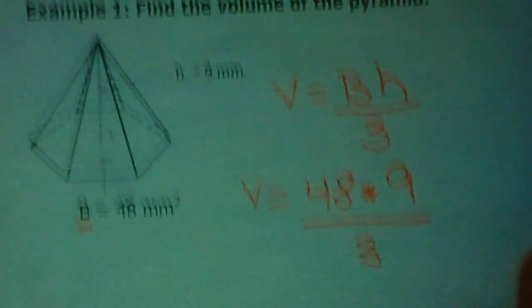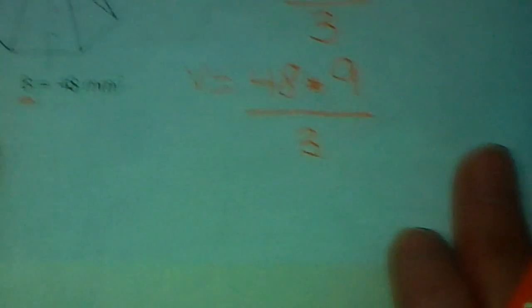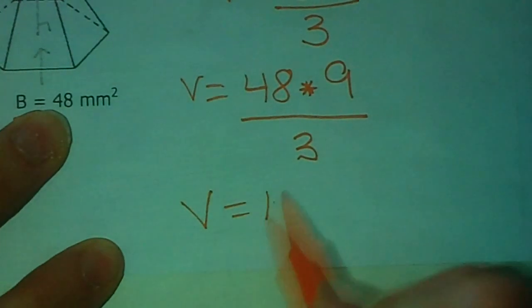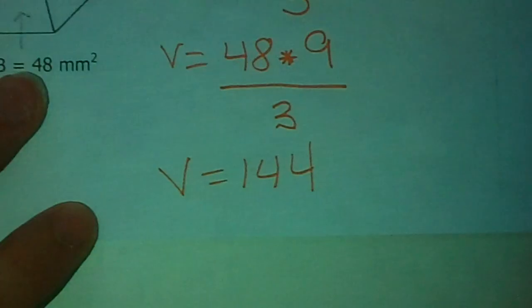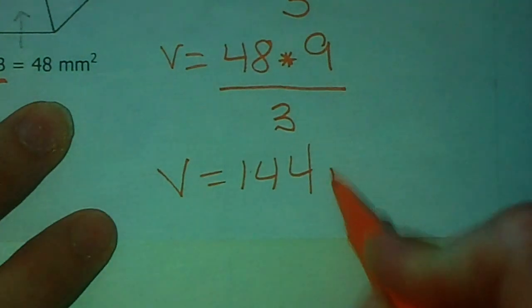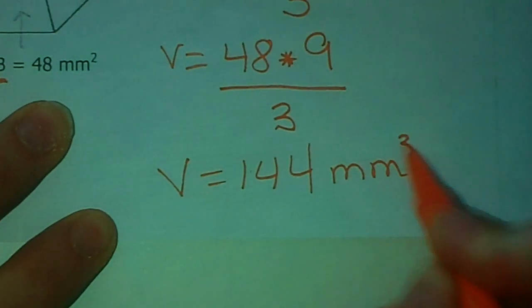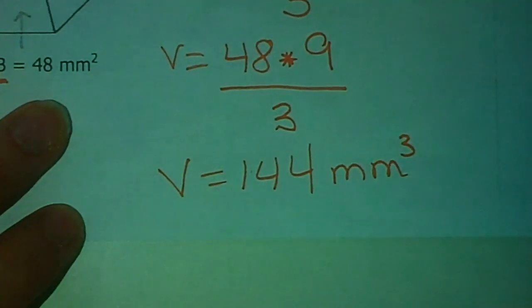So, if you take care of all that in your calculator, go ahead, even though you're just waiting for me to give you the answer. You end up with 144. 144, and again, since we're dealing with volume, we need units to the third power, or cubed. 144 millimeters cubed.